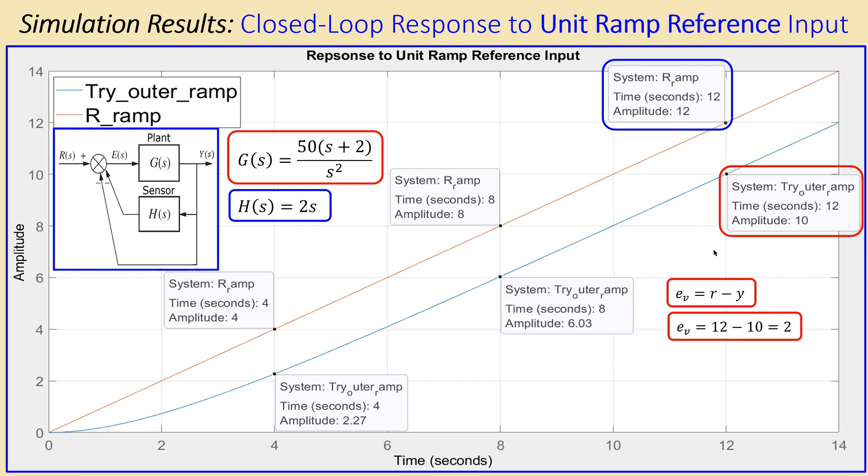Alright, that was a good example about the steady-state error problem, using multiple feedback configuration here, using the velocity and also the position feedback. Velocity feedback is also called the rate feedback. That's another name.